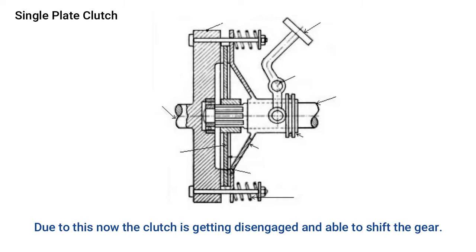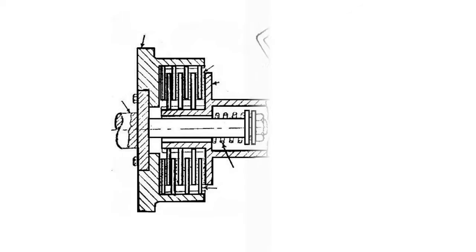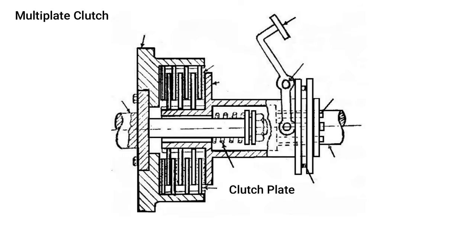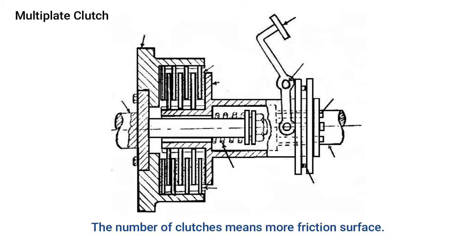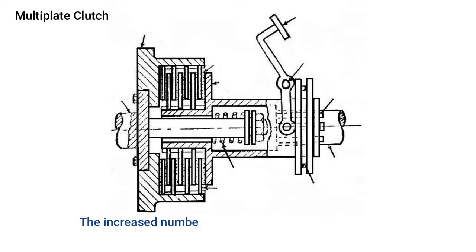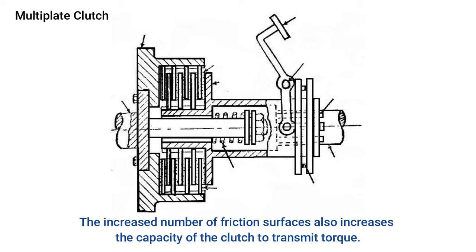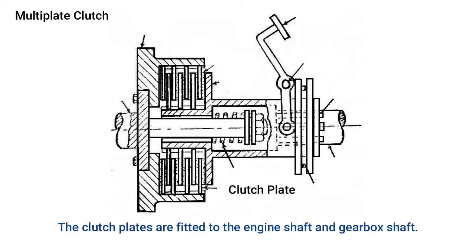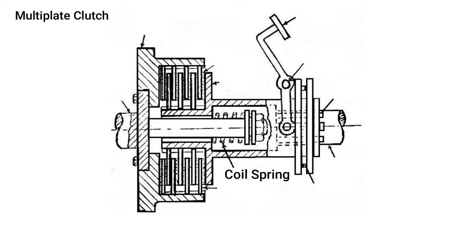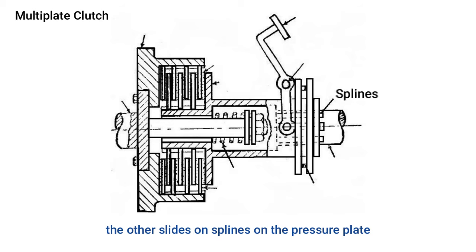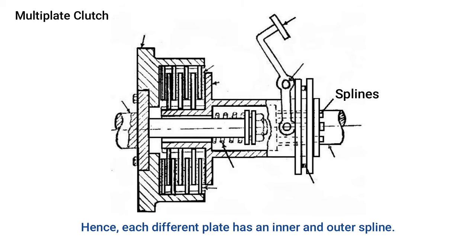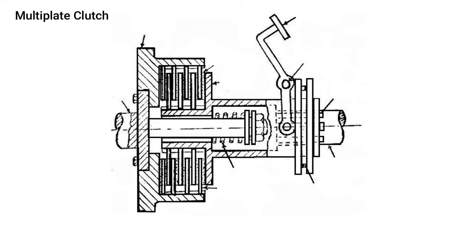In a multi-plate clutch, multiple clutch plates make frictional contact with the flywheel of the engine to transmit power between the engine shaft and the transmission shaft. The increased number of friction surfaces increases the capacity of the clutch to transmit torque. The clutch plates are pressed by coil springs and assembled in a drum. Alternate plates slide in grooves on the flywheel, while others slide on splines on the pressure plate, giving each plate inner and outer splines.